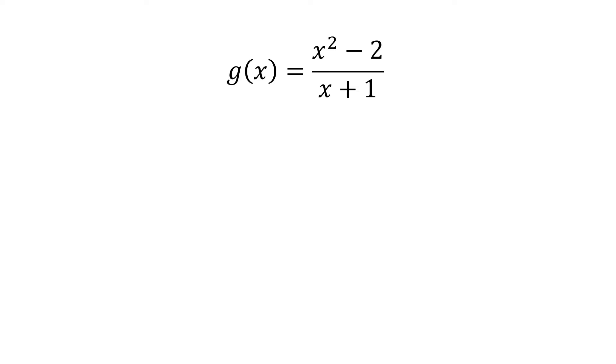Since both the numerator and denominator are non-factorable anymore, then we have to proceed to step 2. Step 2 says that we have to change y or f(x) to zero and then we have to solve for x.